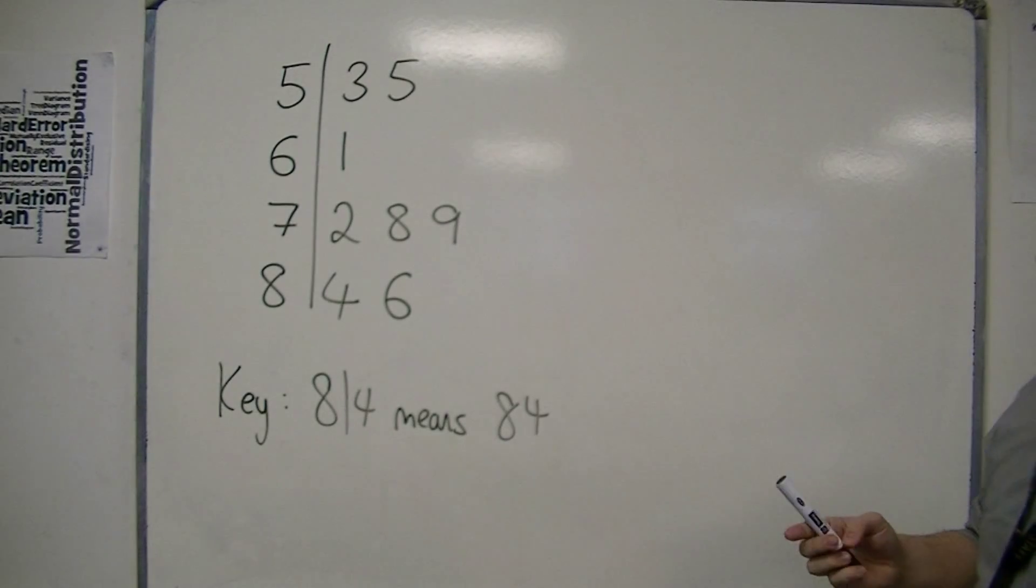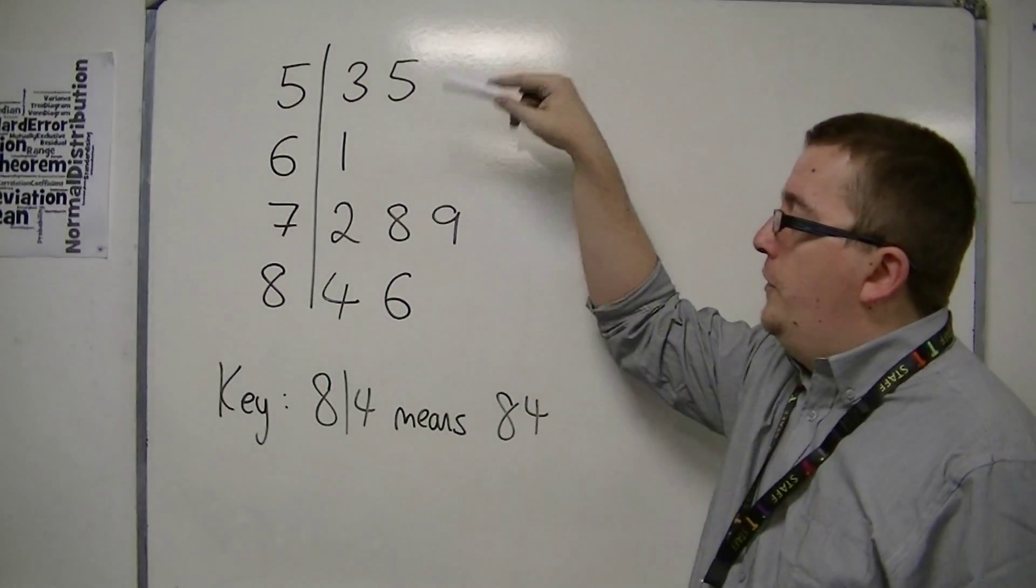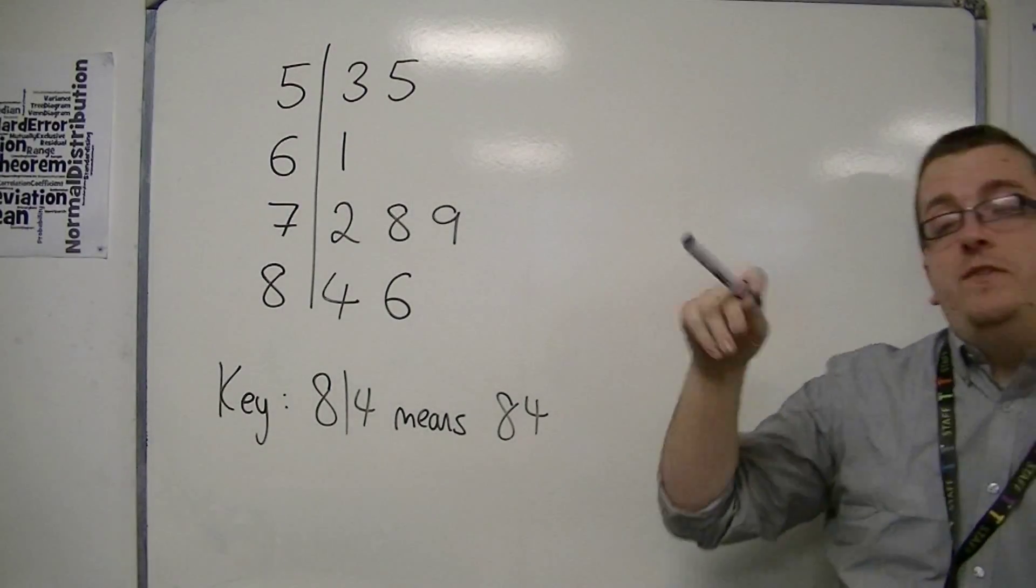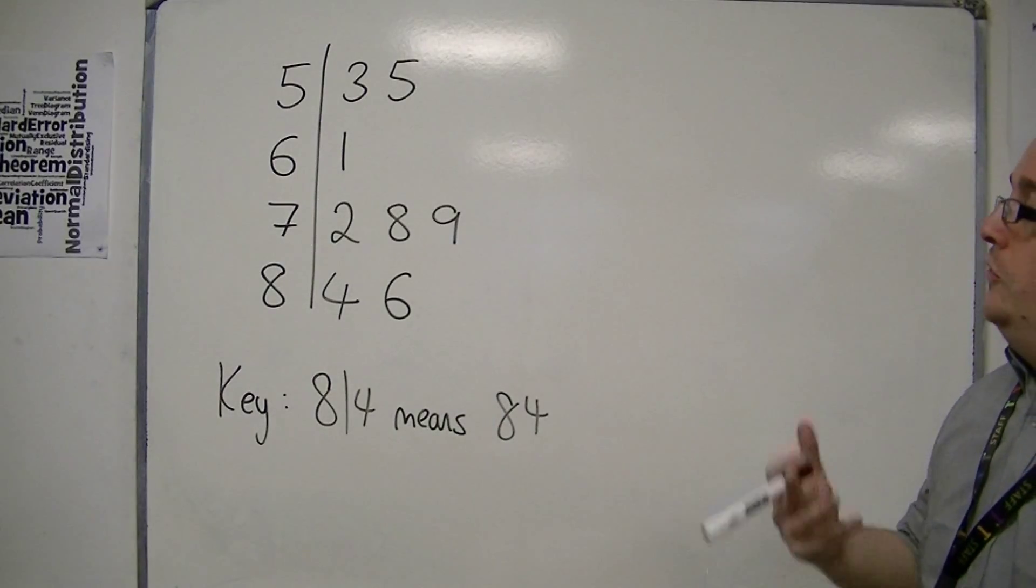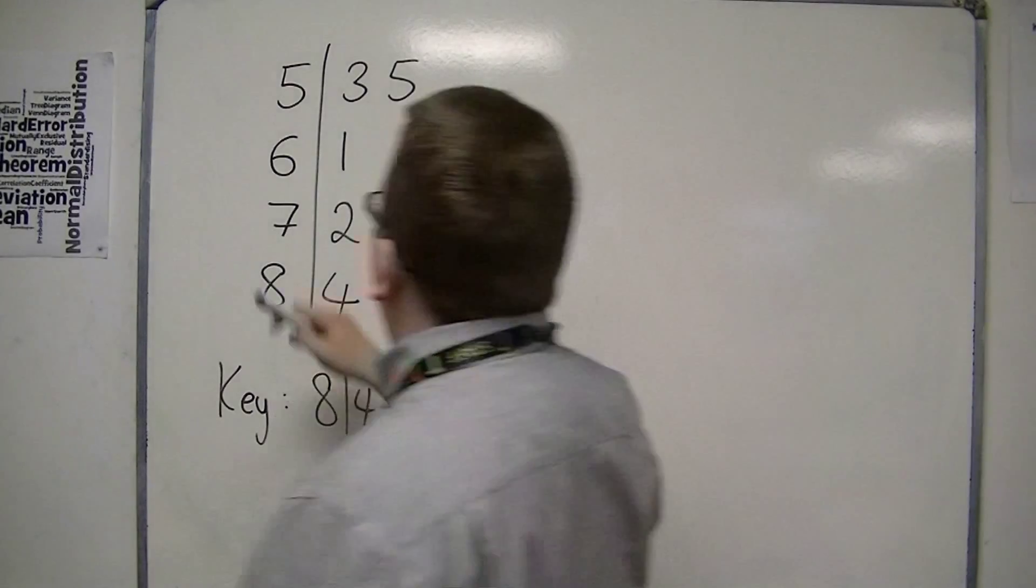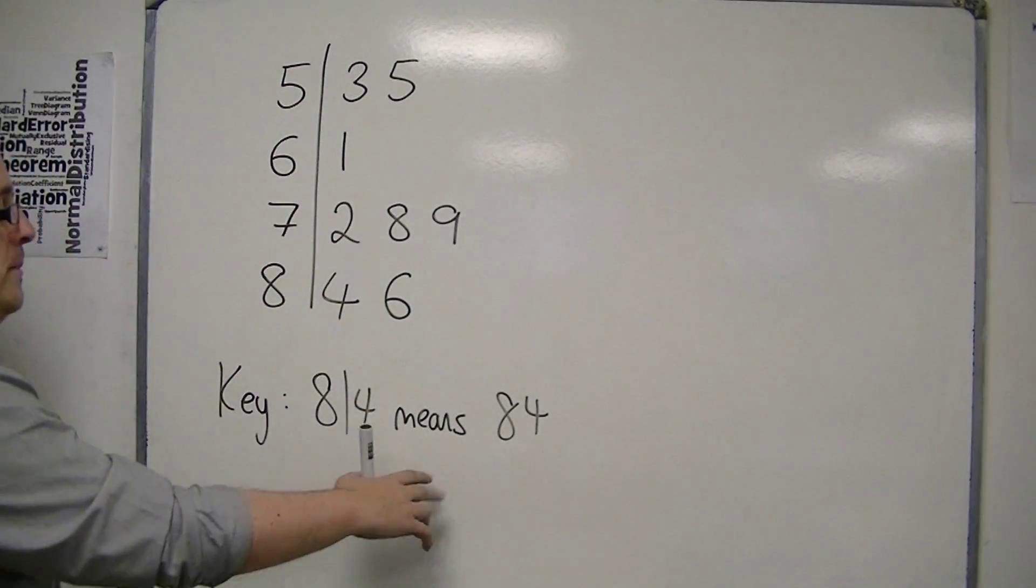So, in order to find the mean of this data, of this stem and leaf diagram, I'm effectively going to have to unravel it to work out what the separate numbers were. So, I've got a key saying that 84 means 84.